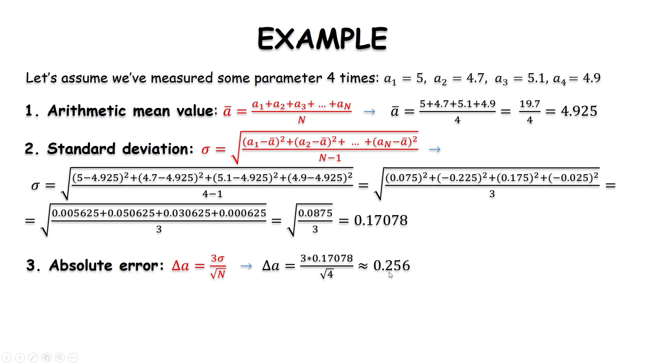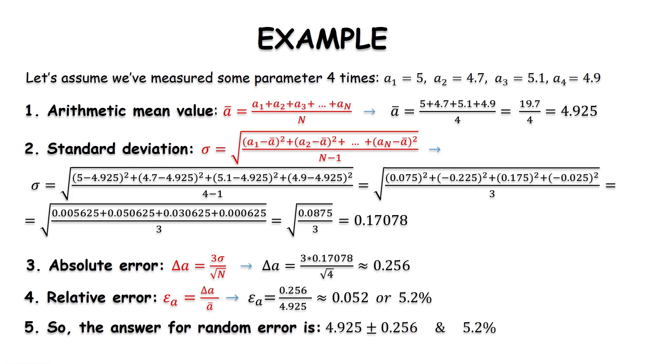Now, we will calculate the relative error. By this equation, we divide our absolute error, 0.256, by the mean value, 4.925. And we will get the answer is about 0.052. Or if we multiply by 100%, we will get the answer in percentages, 5.2.